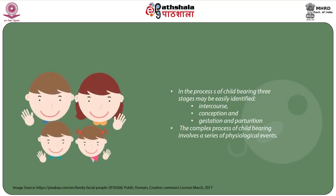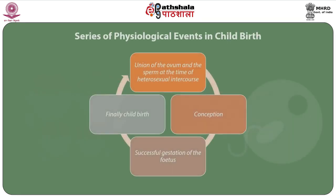In this module we will discuss about the Davis and Blake Intermediate Determinants of Fertility. In the process of childbearing, three stages may be easily identified. These are intercourse, conception, and gestation and parturition. The complex process of childbearing involves a series of physiological events, starting with the union of the ovum and the sperm at the time of heterosexual intercourse, resulting in conception and terminating with the successful gestation of the fetus and finally, childbirth.